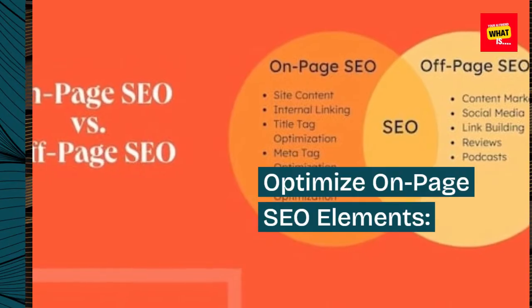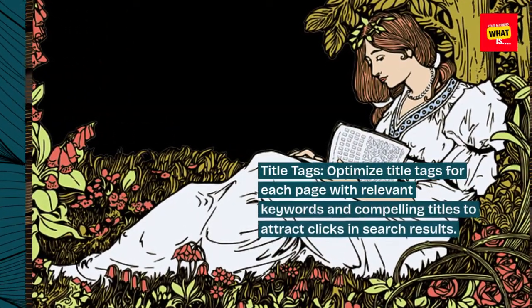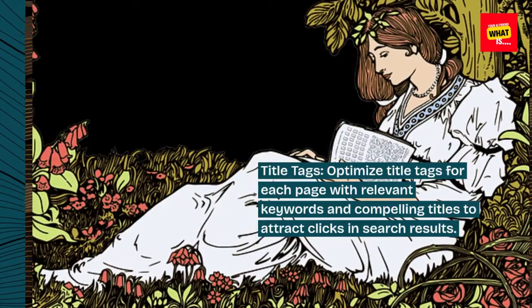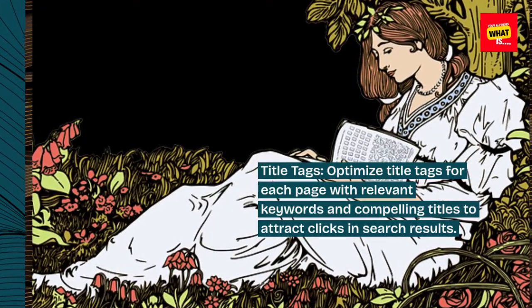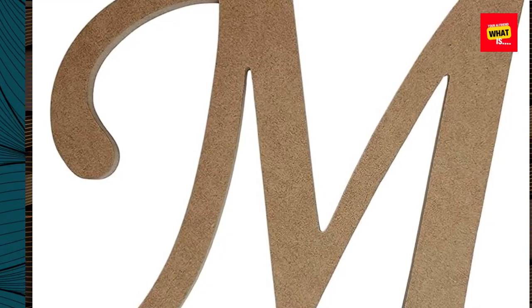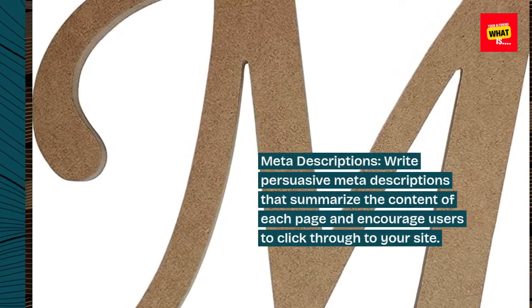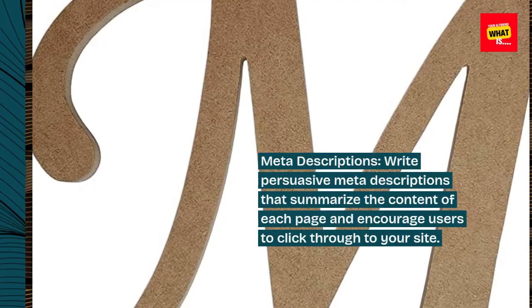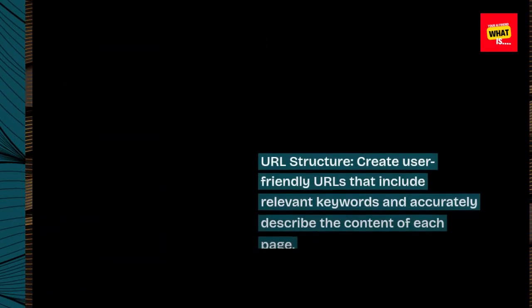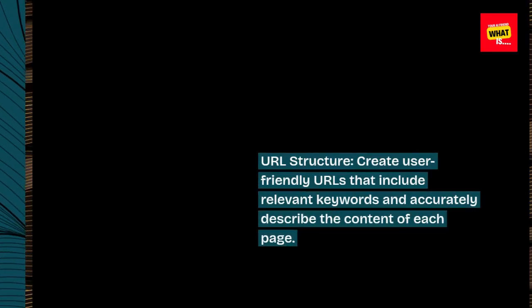Optimize on-page SEO elements. Title tags: optimize title tags for each page with relevant keywords and compelling titles to attract clicks in search results. Meta descriptions: write persuasive meta descriptions that summarize the content of each page and encourage users to click through to your site. URL structure: create user-friendly URLs that include relevant keywords and accurately describe the content of each page.